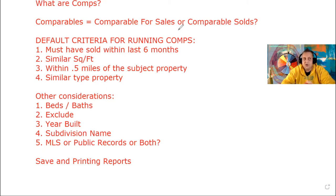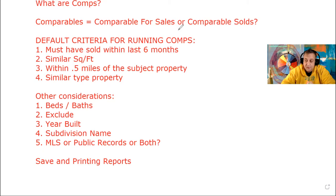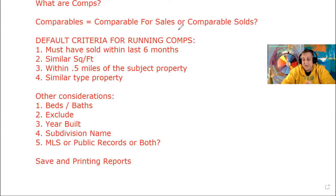Some other considerations: beds and baths — do they have similar beds and baths? Three beds for the subject property, three bedrooms for the comparable properties — that would be great. Two baths and two baths, great. Garage — a two-car garage compared to a two-car garage is ideal. A two-car versus a one-car garage isn't really a great comparable, but sometimes it's the only thing we can find, so we might use it while looking for something better.